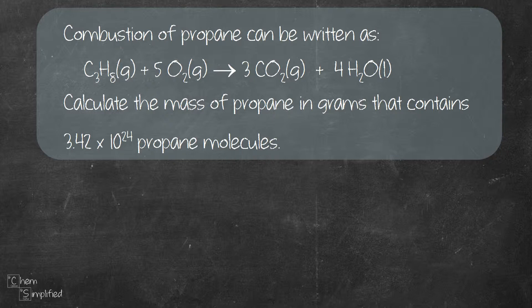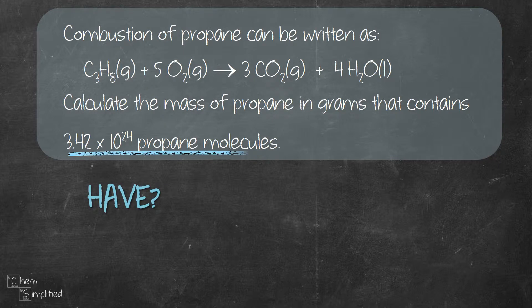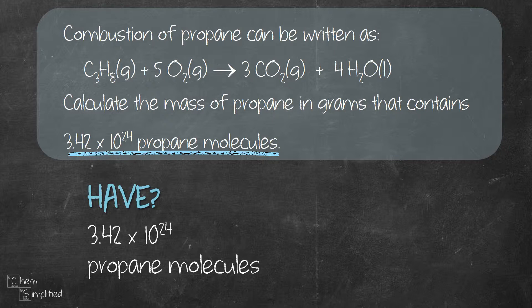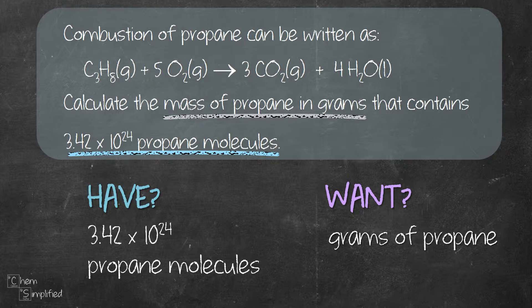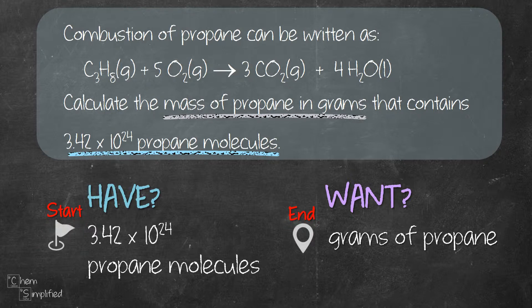Now let's read the question. We're given an equation and we're asked to find the mass of propane, which is C3H8, that contains 3.42 times 10 to the power of 24 propane molecules. So what do we have? It's the number of propane molecules, which is 3.42 times 10 to the 24. And what does the question want? It's the grams of propane. Looks like we're only dealing with one substance here, which is propane.